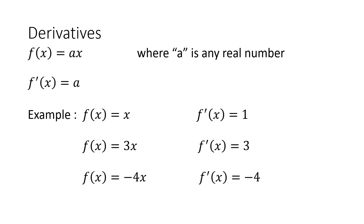Lastly, we have f(x) = −4x. The derivative f prime of x is equal to −4, the coefficient in our term −4x of the original function.